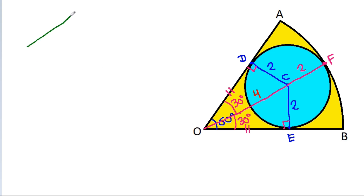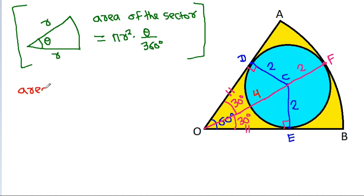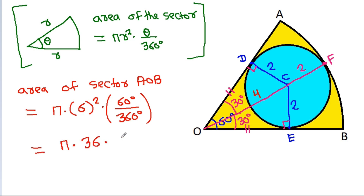Now, in any sector, if the angle is θ and radius is R, then the area of the sector equals πR² times θ divided by 360°. So the area of sector AOB equals π times 6 squared times 60° divided by 360°, which is π times 36 times 1/6, that will be equal to 6π.